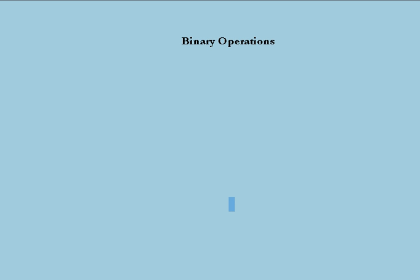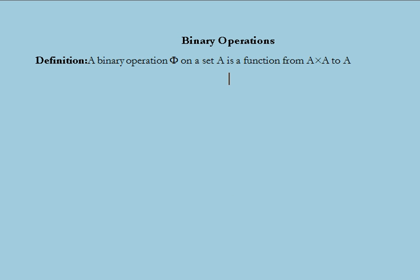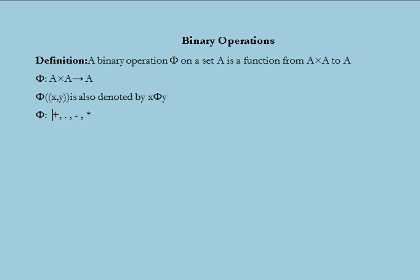Beginning with the basic definition of a binary operation: a binary operation phi on a set A is a function from A cross A to A, represented as phi: A × A → A. The function phi(X, Y) can also be denoted as X phi Y. We use symbols such as plus for addition, dot for multiplication, minus for subtraction, and star for any general mathematical operation.